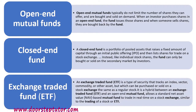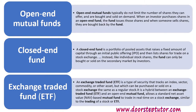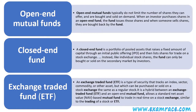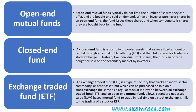Next is the exchange-traded fund. It is a type of security that tracks an index, sector, commodity, or other asset, but which can be purchased or sold on a stock exchange just like regular stock. ETF is like a regular stock, unlike a close-end fund. It is a hybrid between an open-end mutual fund and an ETF, which allows a standard net-asset-based mutual fund to trade in real-time on a stock exchange, similar to the trading of stock or ETF, and is based on net asset value.